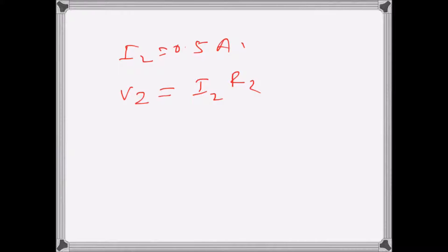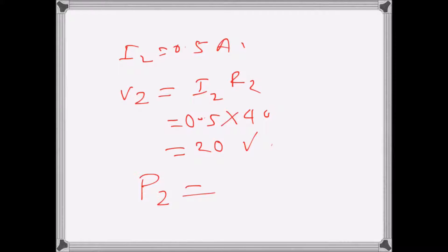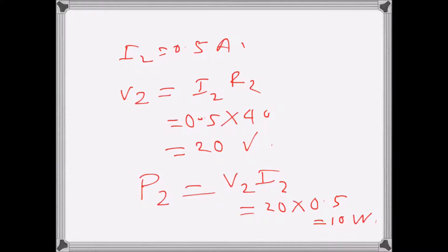V2 = I2 × R2 = 0.5 × 40 = 20 volts. The power P2 = V2 × I2 = 20 × 0.5 = 10 watts. So these are the currents, powers dissipated, and voltages across the resistances in the circuit.